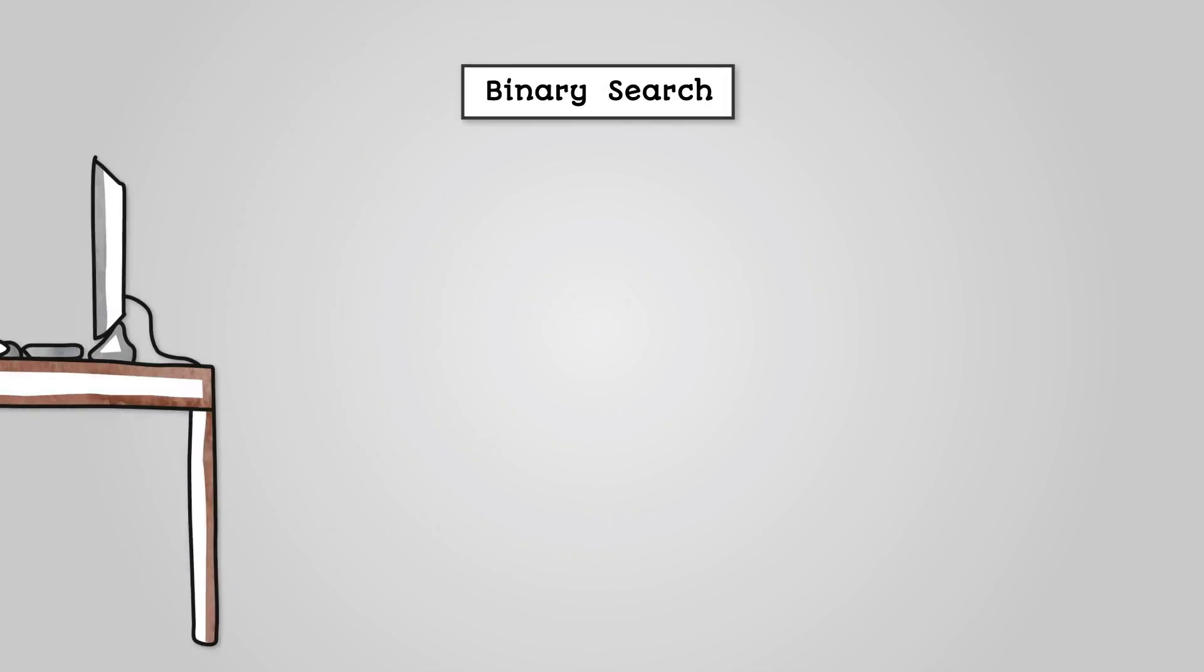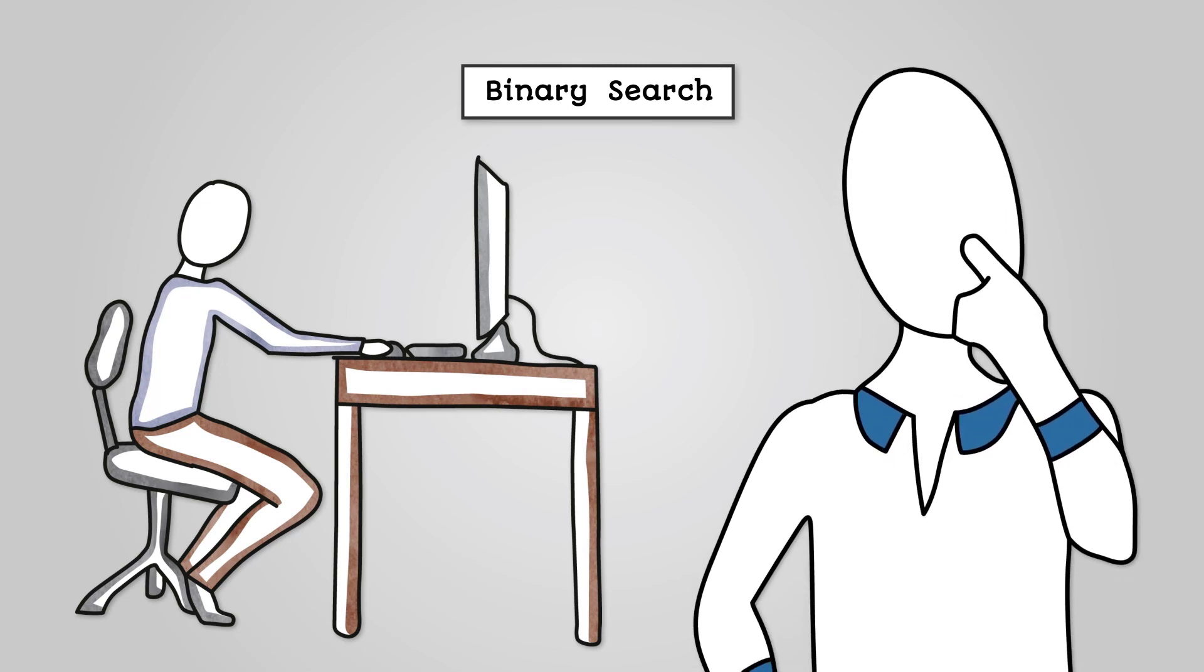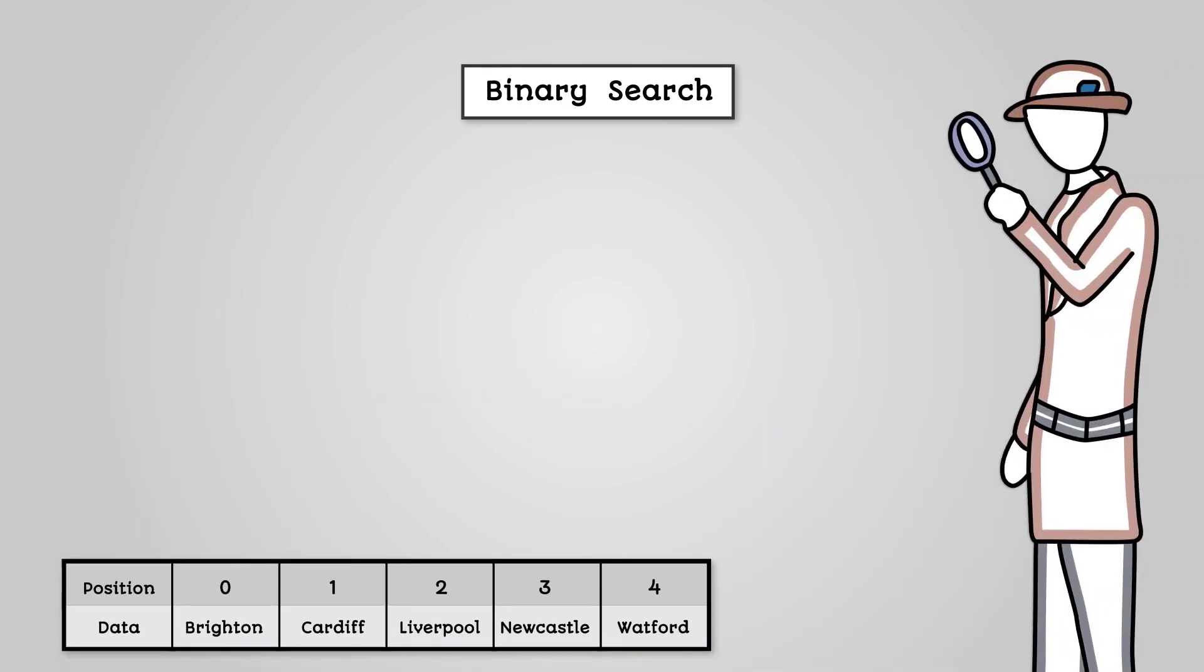We've seen the code for a binary search algorithm and in theory how it works. But what are the stages it goes through in order to find an item in a list? Let's create a trace table to work through this algorithm and see what is happening step by step.